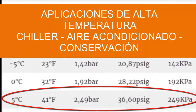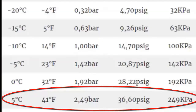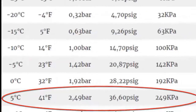5. To achieve a temperature of 5 degrees Celsius in the evaporator, equivalent to 41 degrees Fahrenheit, a low gauge pressure of 2.49 bars is needed, equivalent to 36.60 PSIG or 249 kilopascals.